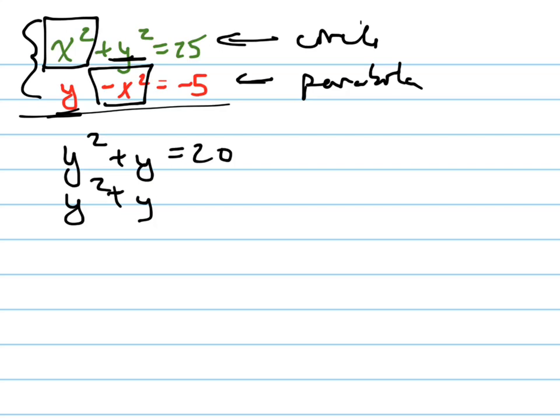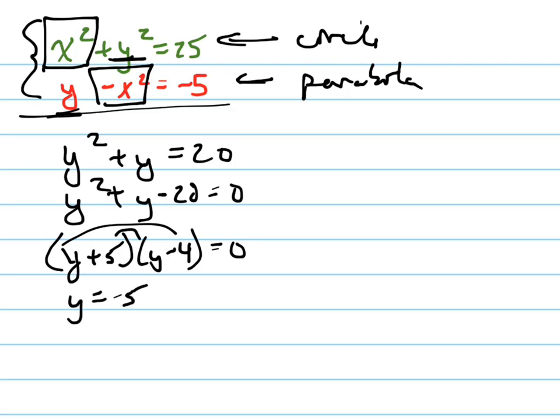Now I'm going to solve this quadratic equation. And fortunately, it factors into y plus 5, y minus 4. Check in my head when I foil it back out, and yeah that's how it factors. And so y equals negative 5 and y equals positive 4 are my two values of y.